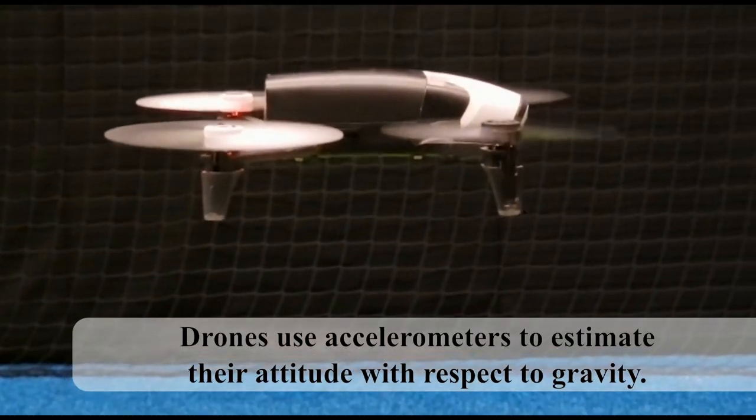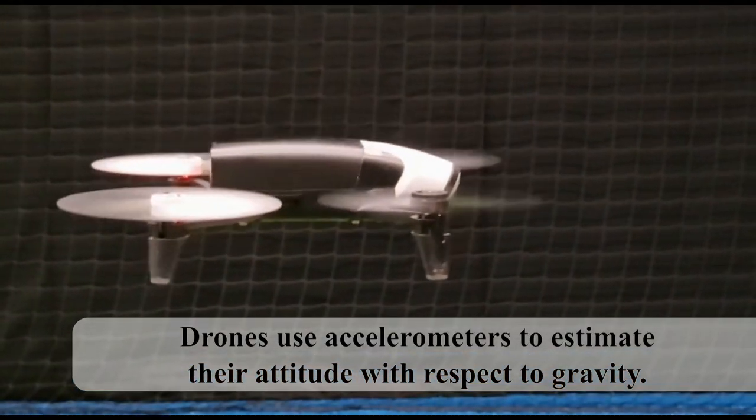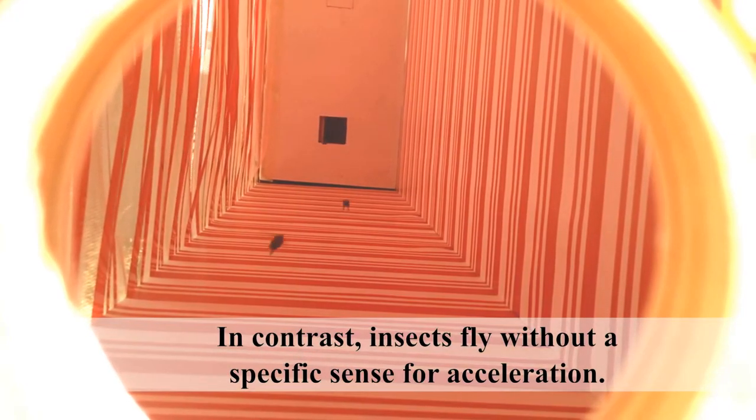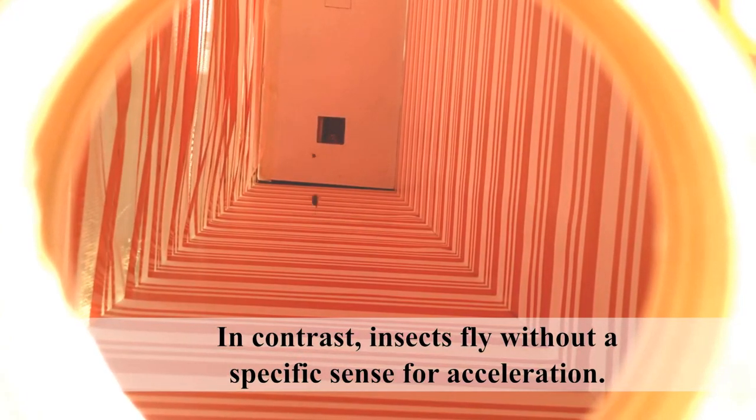Drones use accelerometers to estimate their attitude with respect to gravity. In contrast, insects fly without a specific sense for acceleration.